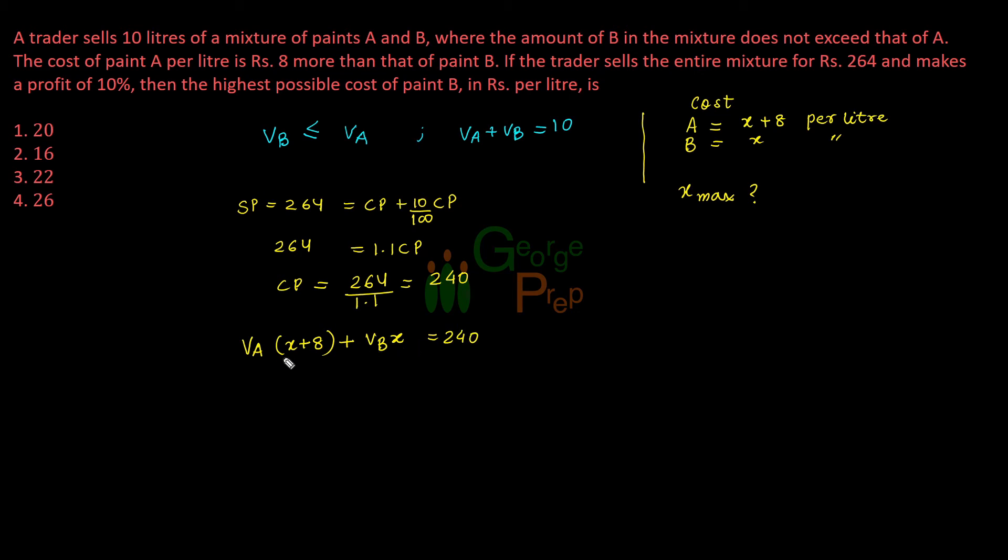Let me take X separately here. From VA into X and VB into X, I'm taking X common. So that comes to VA plus VB times X, and this part VA into 8 I'm writing as 8VA, which equals 240. If we notice, VA plus VB is a constant that is 10 liters, so I'm writing it as 10X plus 8VA equals 240.